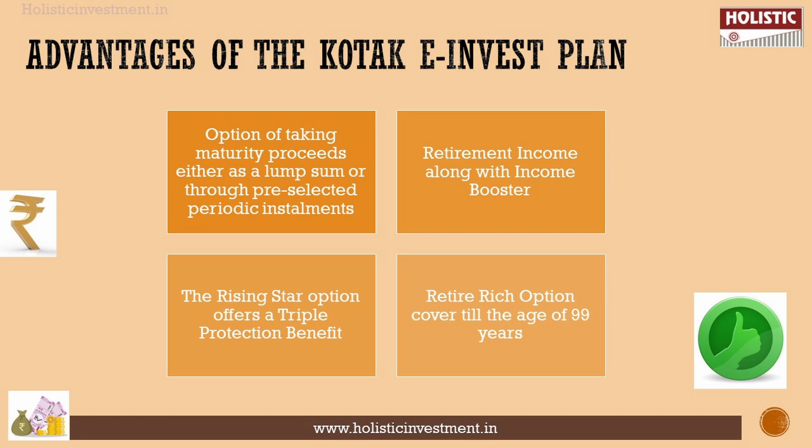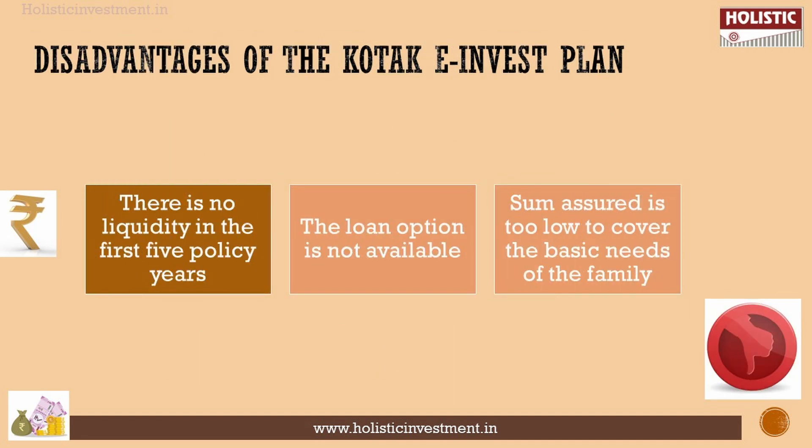The triple protection benefit under the Rising Star option provides a lump sum payment, monthly income, and policy continuation until maturity. The Retire Rich option is designed to provide retirement income for life. You receive benefits on your terms — pension-like payouts for the initial years.